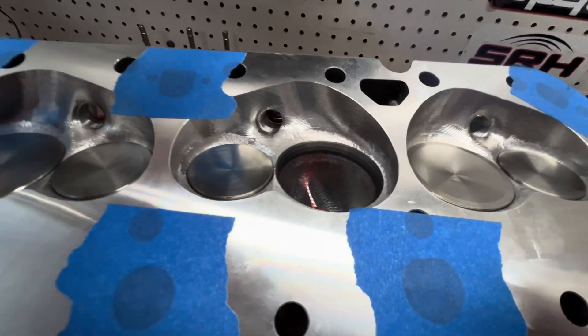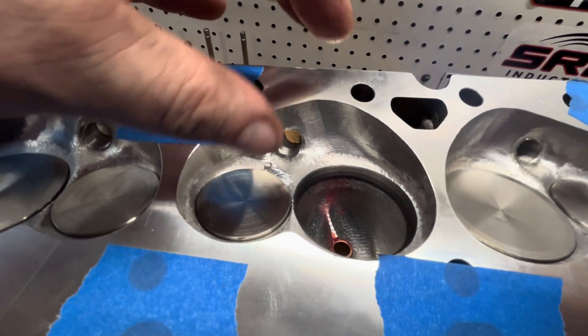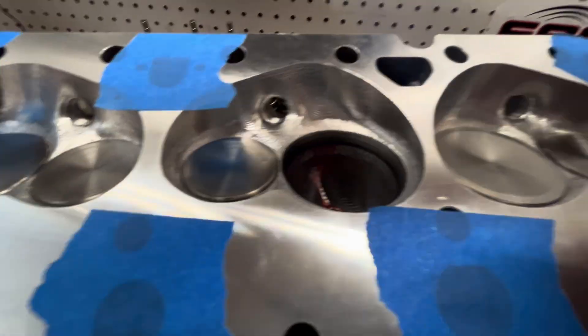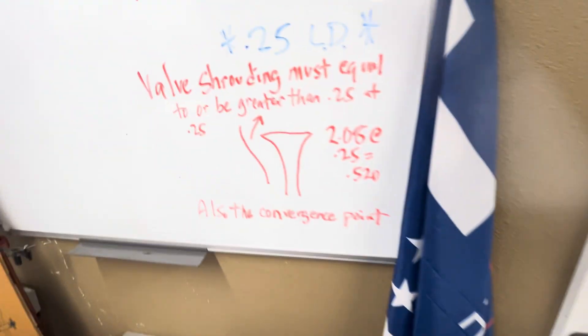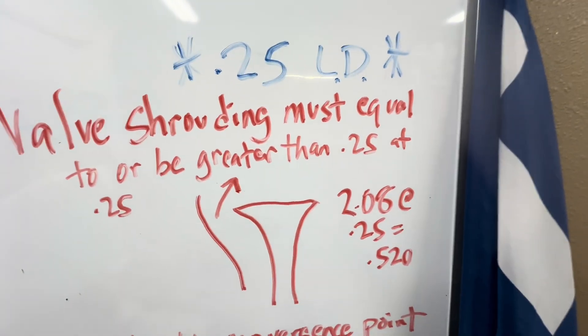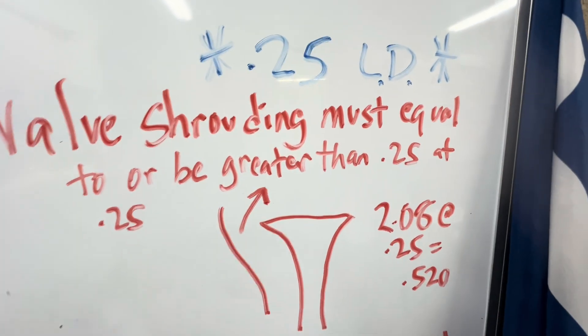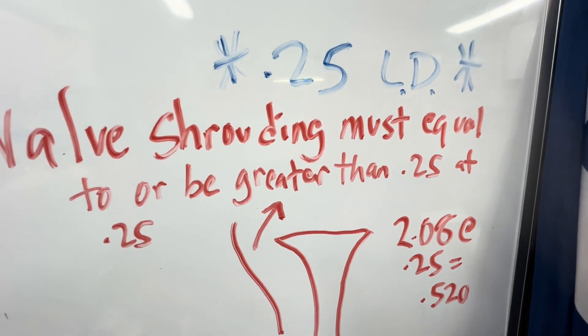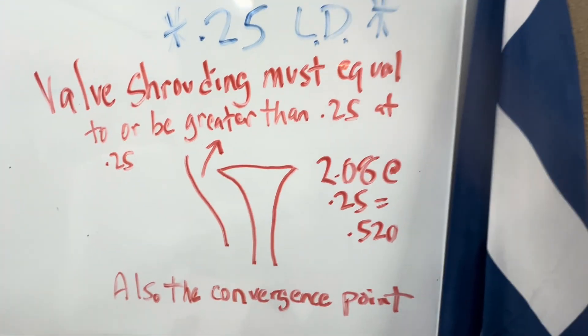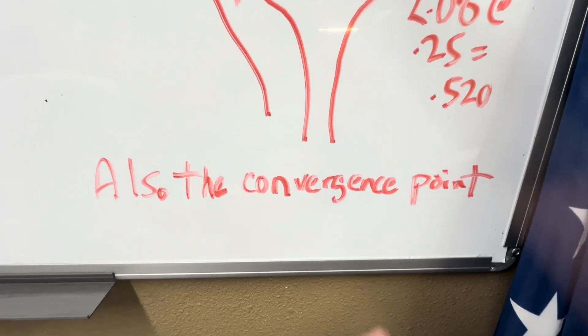Okay, that's real important because this type of cylinder head, you're not going to be able to get a convex. You're not going to be able to fill all that in and make it like a 13 degree, and I'll show you why.